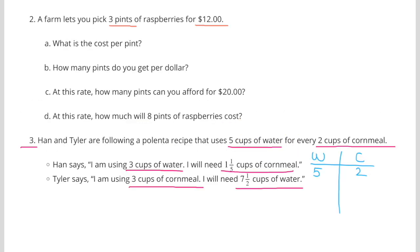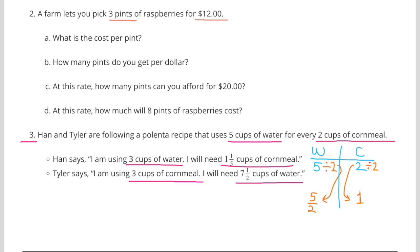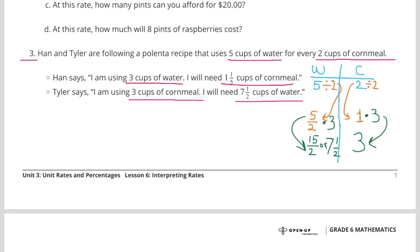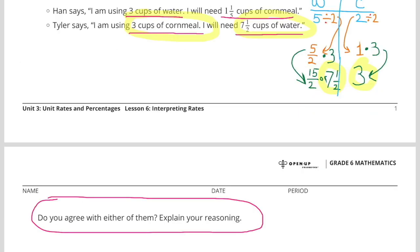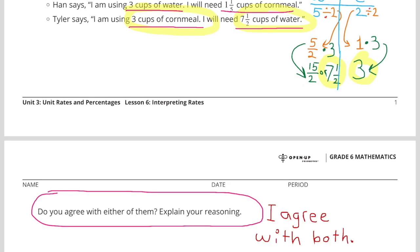Now let's see how Tyler did. 5 cups of water for every 2 cups of cornmeal. 2 cups of cornmeal divided by 2 to get 1 cup of cornmeal, and 5 divided by 2 to get 5 halves cups of water. Tyler says he's using 3 cups of cornmeal. So let's multiply his 1 cup of cornmeal times 3 to get 3. Since we multiplied that side by 3, we'll have to multiply the 5 halves by 3, and that's going to give us 15 halves or 7½ cups of water, which is exactly what Tyler said he needed. So the question for number 3 asks, Do you agree with either of them? And my answer would be yes. I agree with both of them.